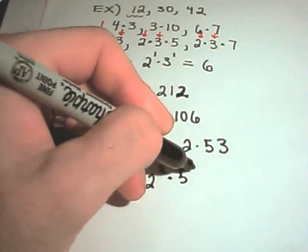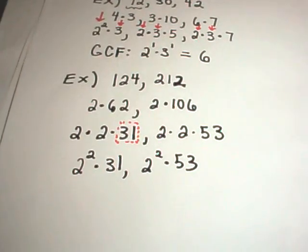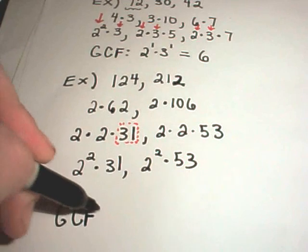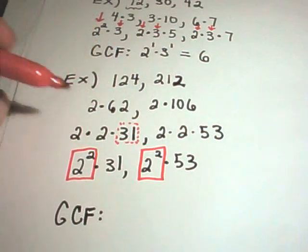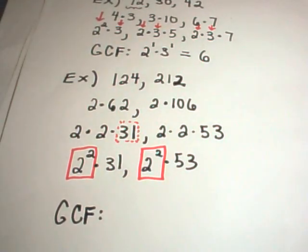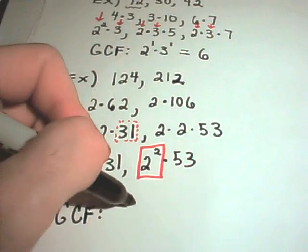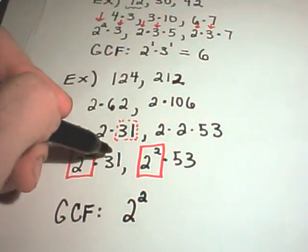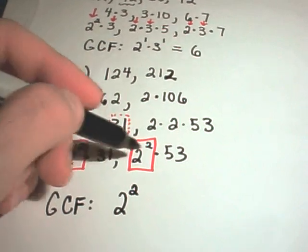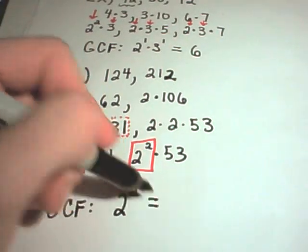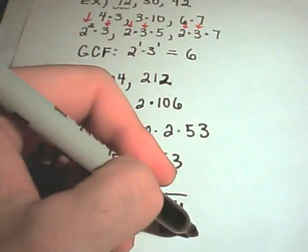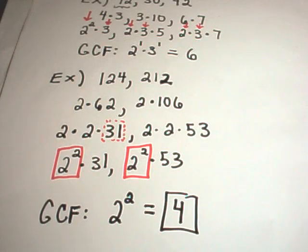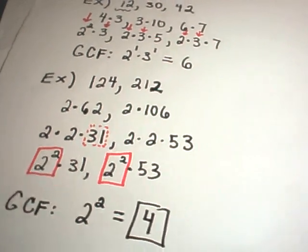I do the same thing to find my greatest common factor. There's a 2 in both, and they're both to a power of 2, so I can pull out 2 squared. Then 31 doesn't appear in the other, so you're basically done. The greatest common factor of 124 and 212 is just 4. Both are pretty big numbers, so it feels like something bigger should go into them, but it turns out 4 is the greatest common factor.